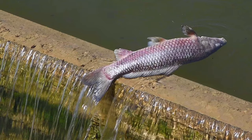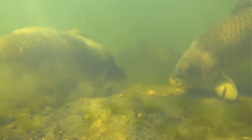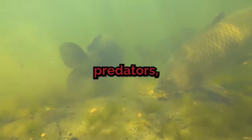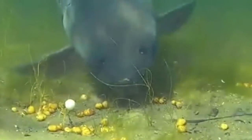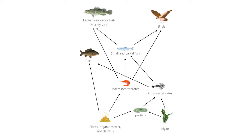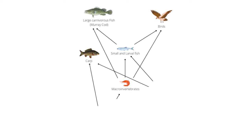Carp are only really killed by natural causes, by humans, or as babies by Murray cod. Since they have no real major predators, it is very easy for them to overrun waterways, essentially taking out the bottom level of the food chain and affecting other fish populations.